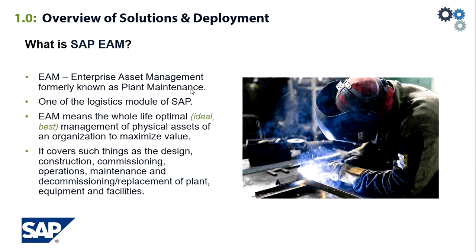EAM means the whole life optimal — the ideal or best — management of physical assets of an organization to maximize value. It covers such things as design, construction, commissioning, operations, maintenance, and decommissioning, replacement of plant and equipment and facilities.